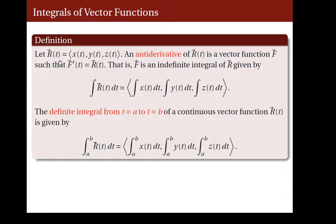Let R be the vector-valued function whose coordinates are x of t, y of t, and z of t. An antiderivative of R of t is a vector function f such that when we differentiate f, we get the function r. In other words, the function f is an indefinite integral of r, given by the vector-valued function whose coordinates are the integral of x of t dt, the integral of y of t dt, and the integral of z of t dt.